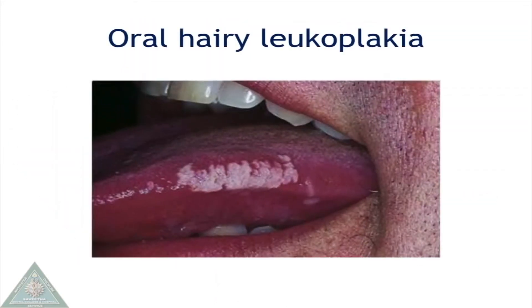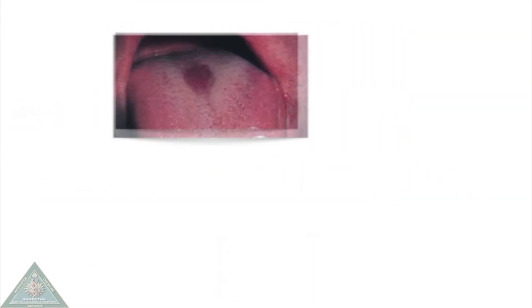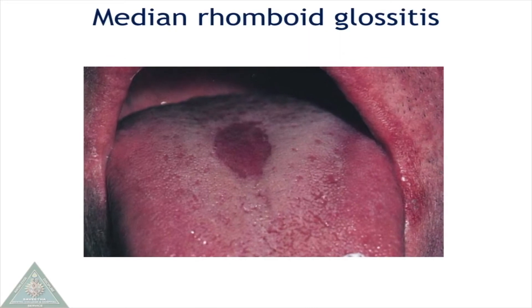Oral hairy leukoplakia is caused by Epstein-Barr virus and appears as a non-scrapable white patch on the lateral borders of the tongue. It is most often seen in immunocompromised people.